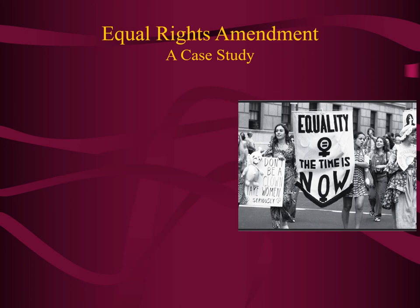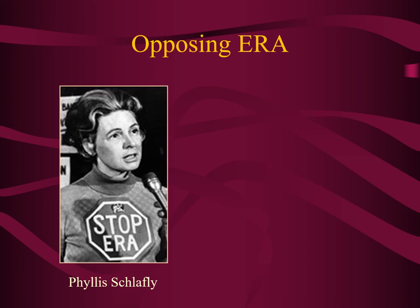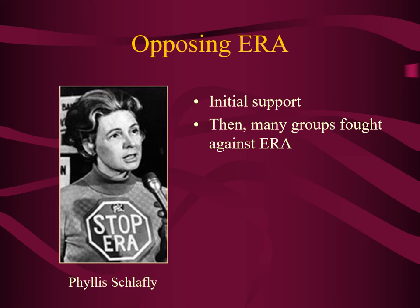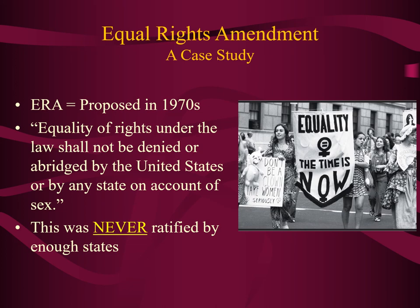A useful case study is the Equal Rights Amendment. In the 1970s, it was proposed by a two-thirds vote in the House and Senate. Its exact language stated that equality of rights under the law shall not be denied or abridged by the United States or by any state on account of sex — basically prohibiting discrimination based on sex. Initially there was great support, and thirty states ratified it, but opposition began to grow. When many women, including Phyllis Schlafly, came out against it, it gave the ERA a death blow. It was never ratified by enough states, so we do not have a constitutional provision calling for equal rights based on sex.